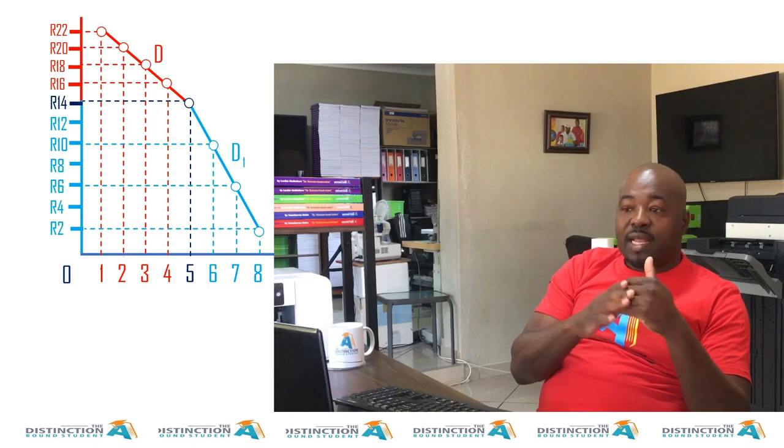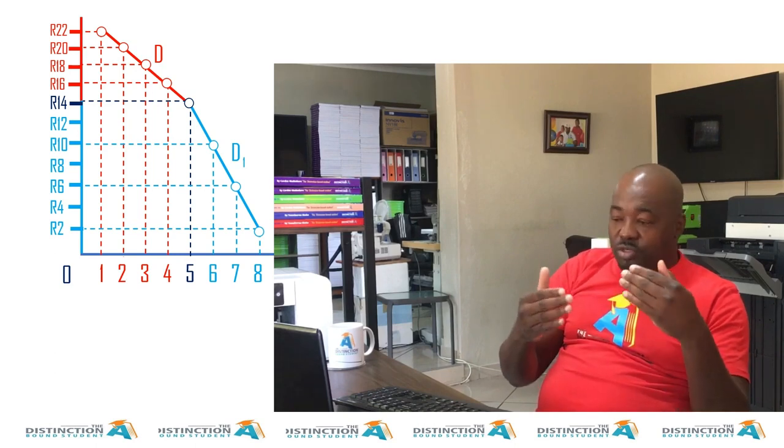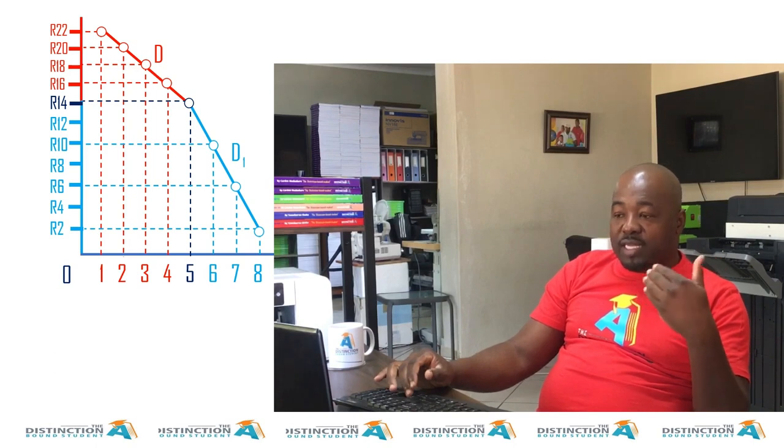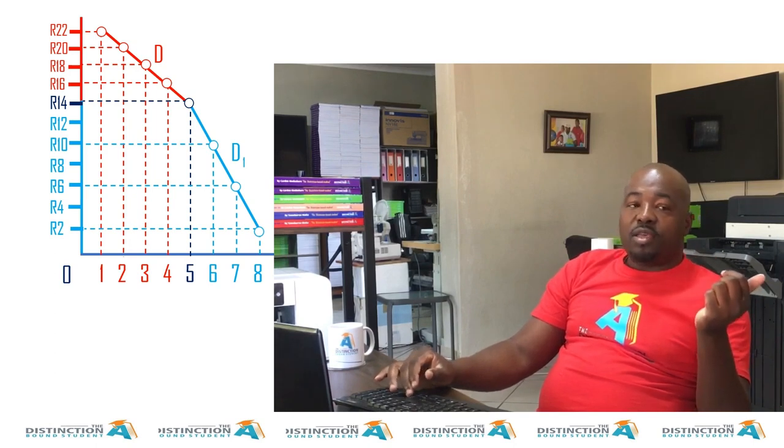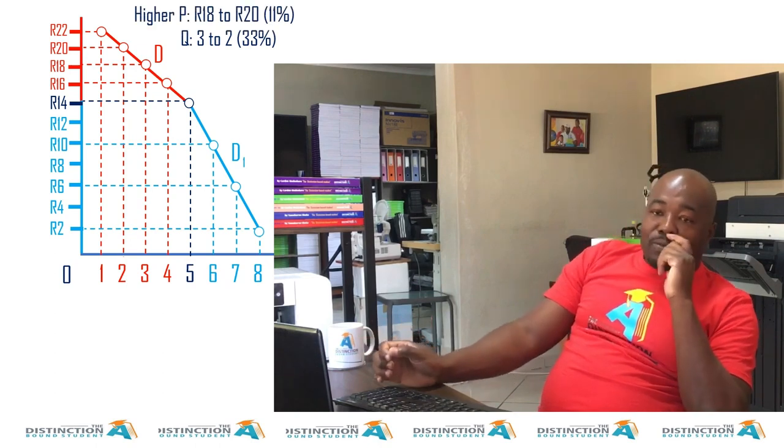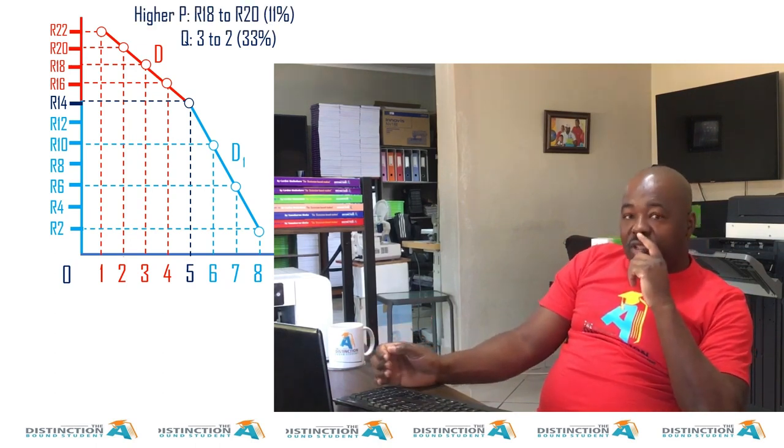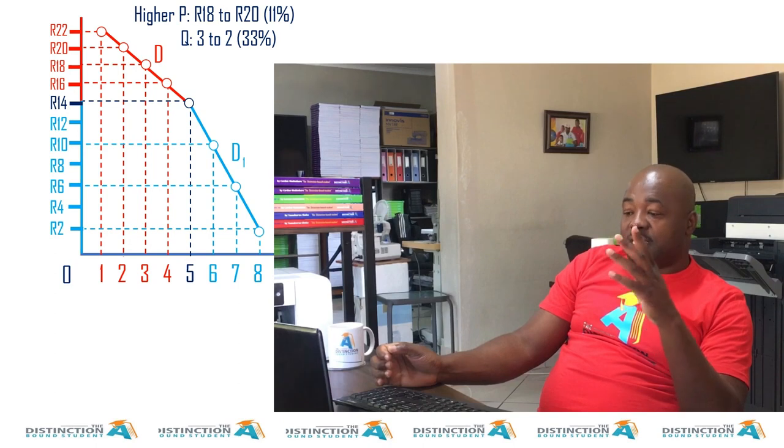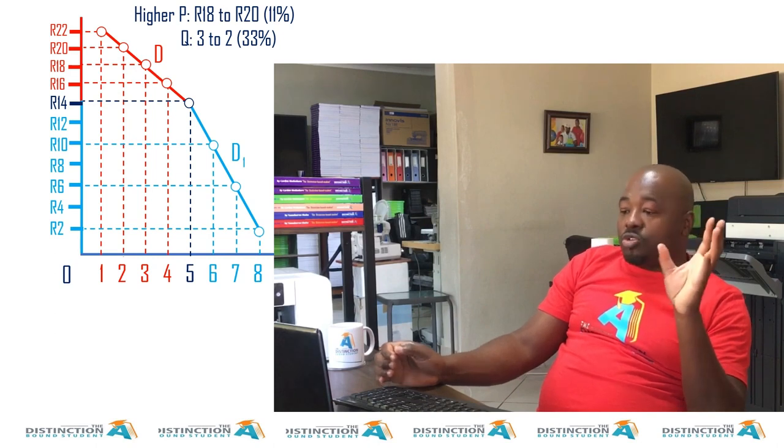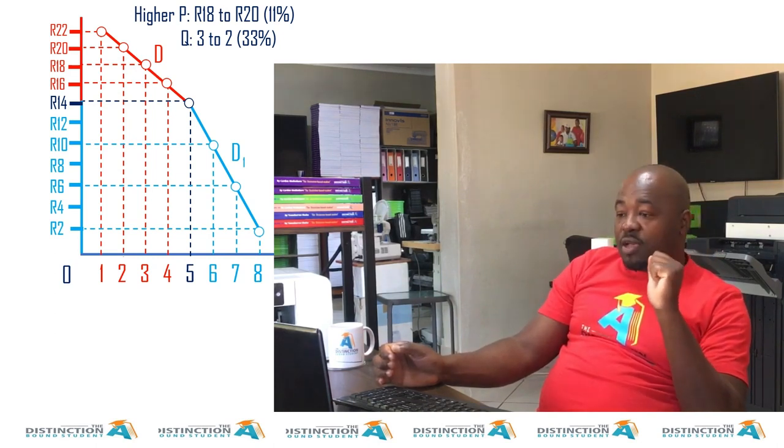Let's try to see how elastic each demand curve is. Do you think the top one is more elastic than the lower one? What do you think? But I think if you understand what elasticity really is, you can tell which one is more elastic than the other. Now we all know the formula for calculating elasticity. It's percentage change in quantity demanded divided by percentage change in price.